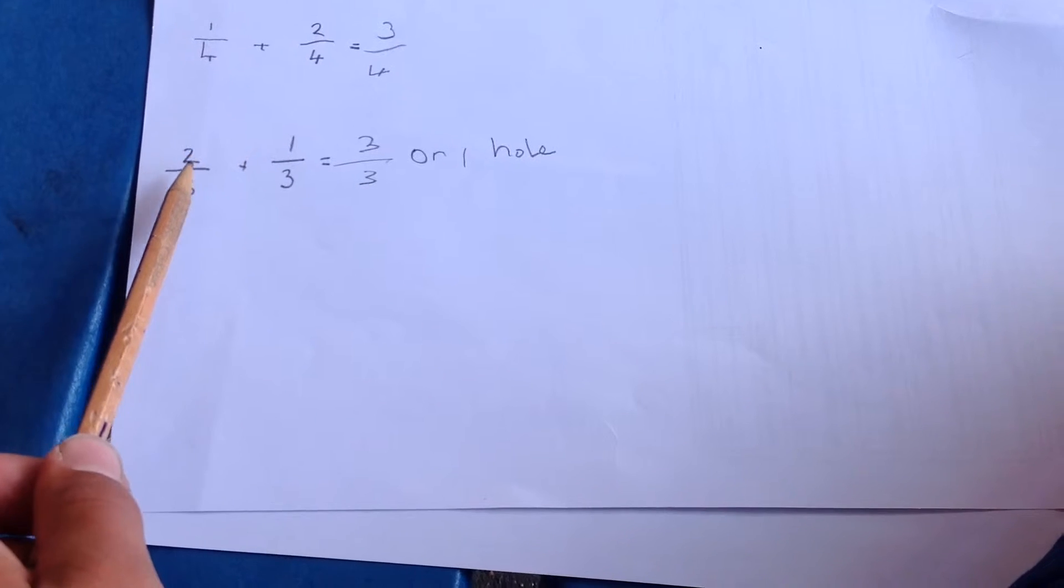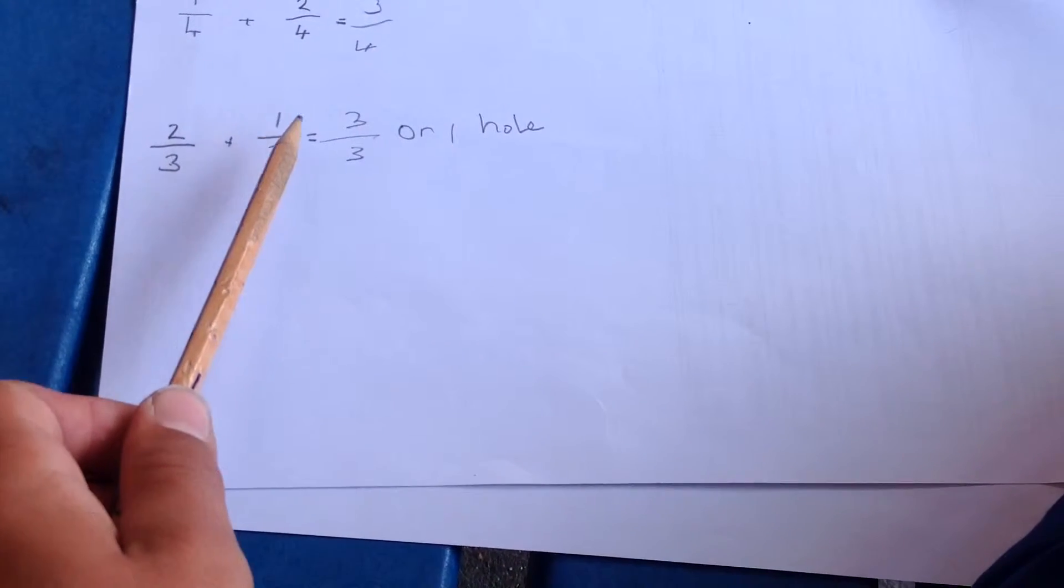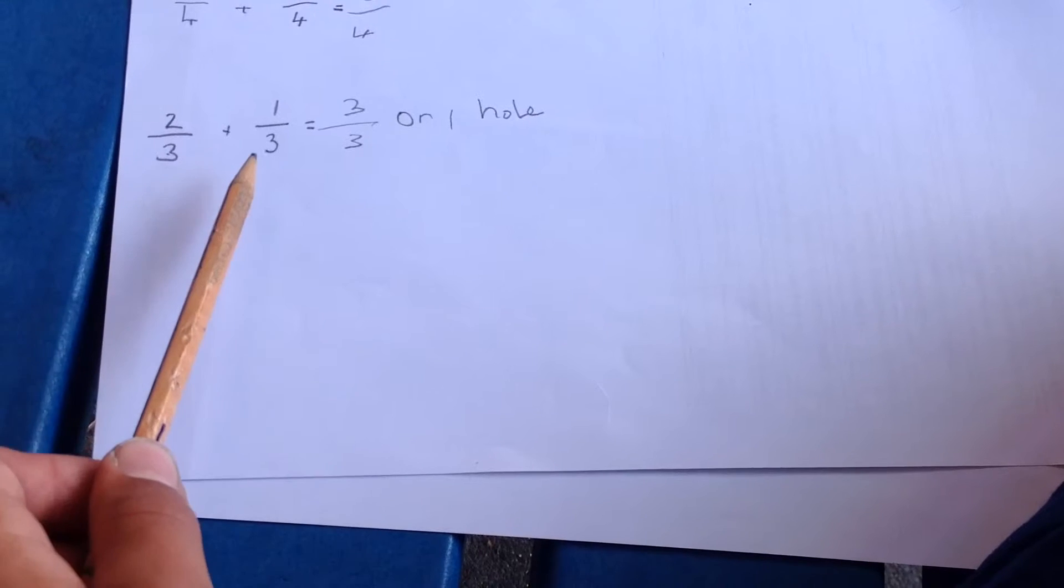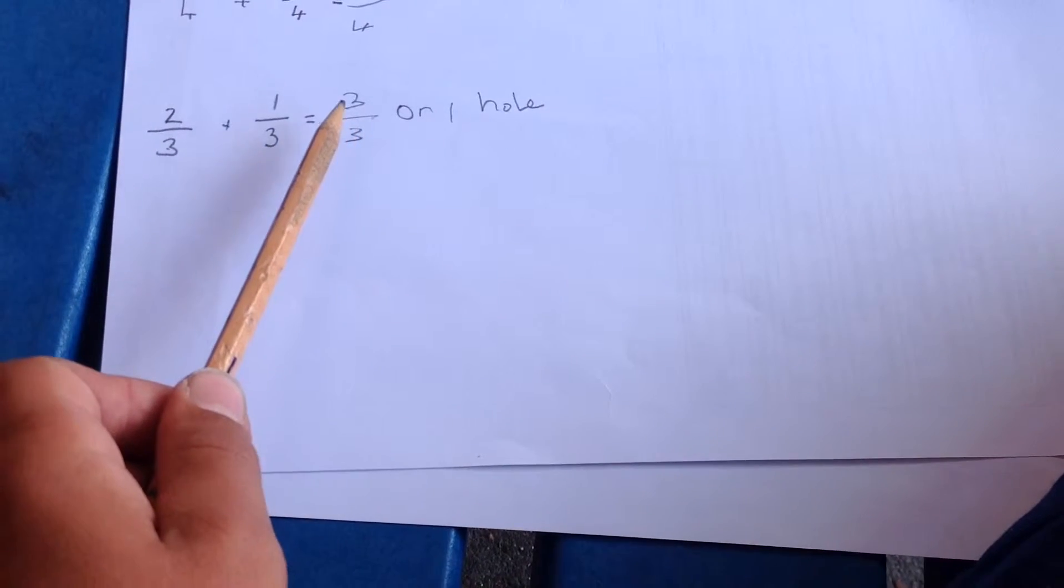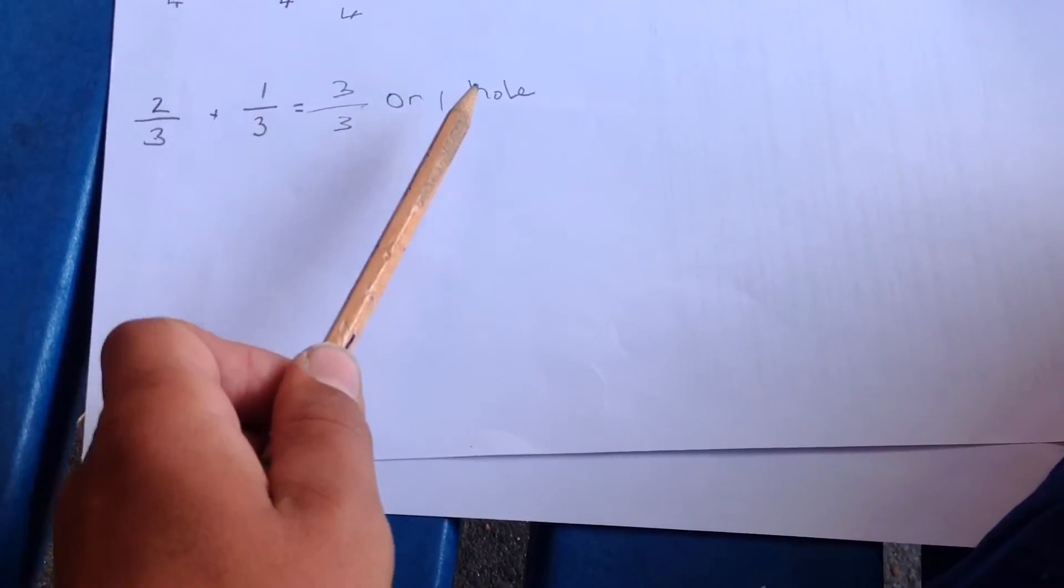This next one, the 2 and the 1, you would add that up and it would be 3. The two bottom ones you did not change, so it would be 3. You can call this 3 threes or one whole.